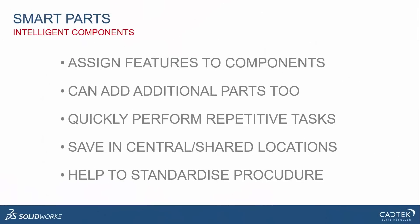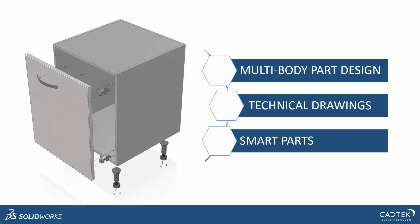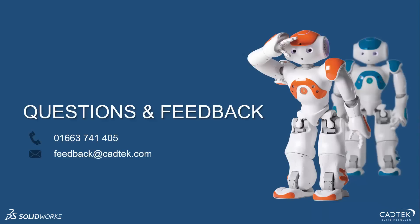So I showed you all about using smart parts — or intelligent parts. It's a way of assigning certain features to components so when you bring something in it does something: cuts a hole, adds a boss, adds additional parts like fixings or brackets. It's a way of quickly doing repetitive things, and you can save them in a central location to share with peers and standardize procedures. To recap: we looked at multi-body part design, technical drawings and cut lists, and finished on smart parts. If you've got any questions or feedback, please get in touch: 01663 741 405, or email feedback@cadtech.com. Thanks very much for your time, take care, bye bye.